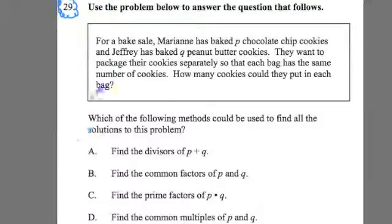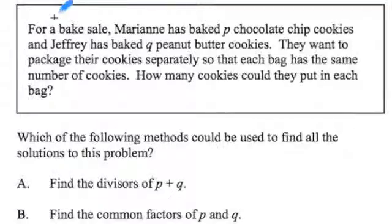So let's look at number 29. I'll read it over and then we'll talk about it. It says use the problem below to answer the question that follows. They give a scenario. For a bake sale, Marion has baked P chocolate chip cookies and Jeffrey has baked Q peanut butter cookies. They want to package their cookies separately so that each bag has the same number of cookies. How many cookies could they put in each bag?